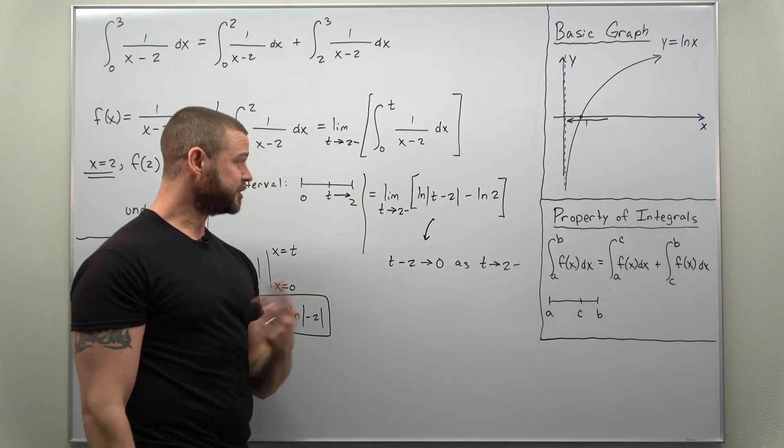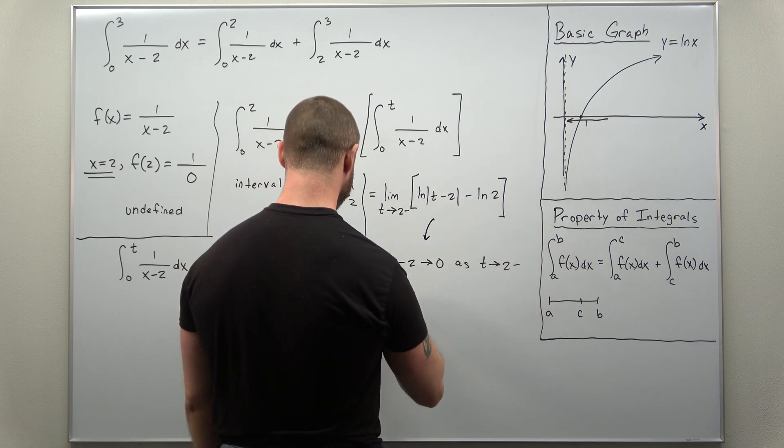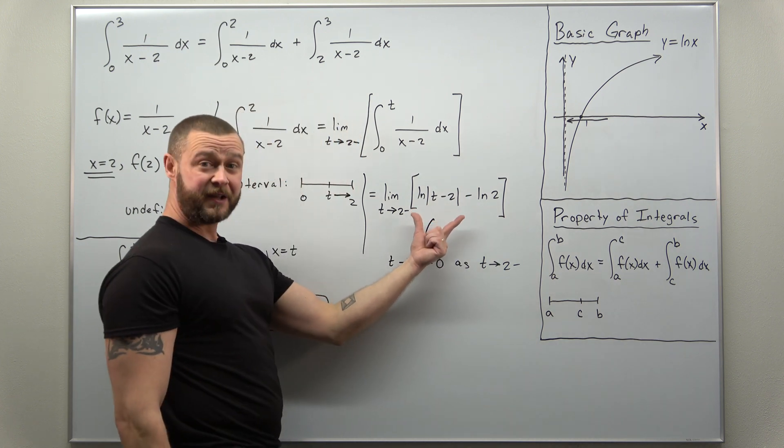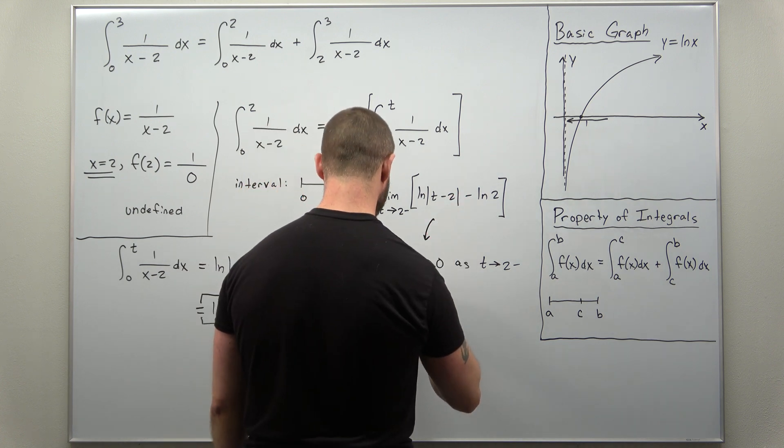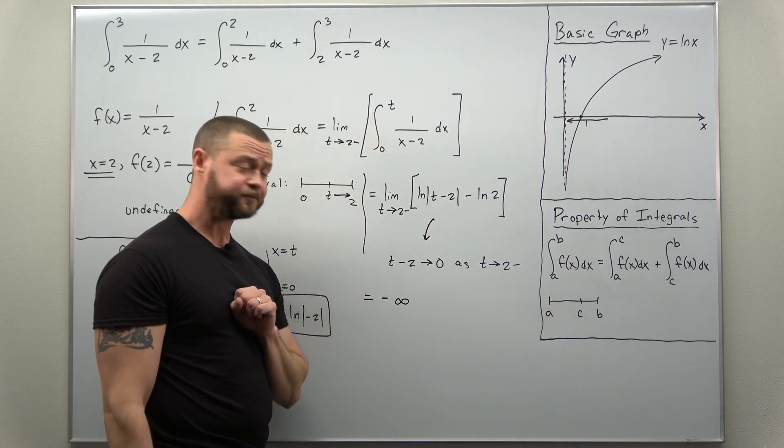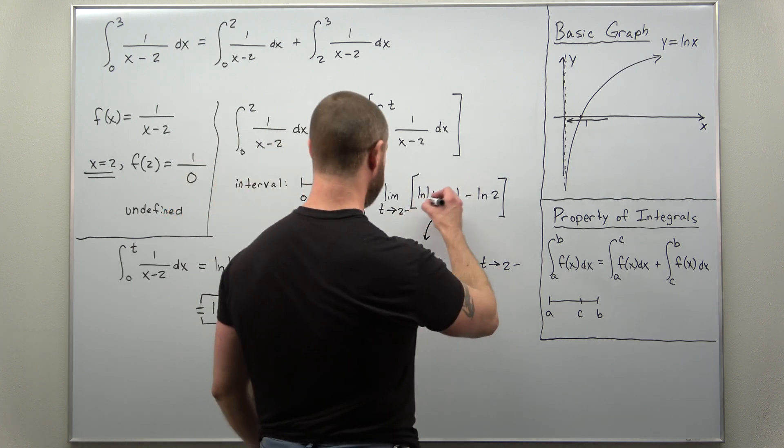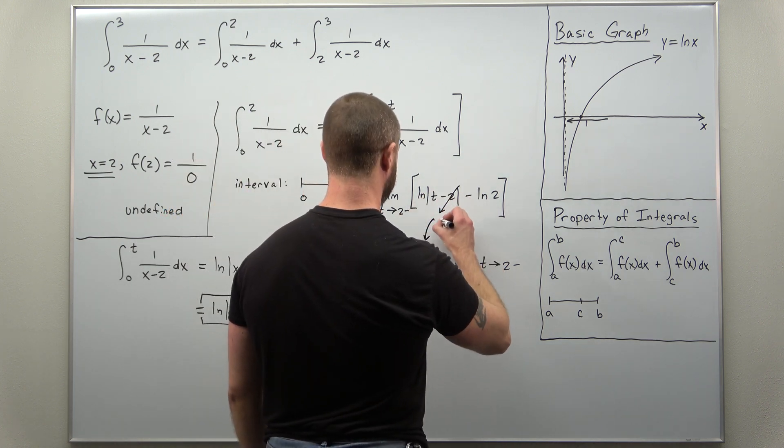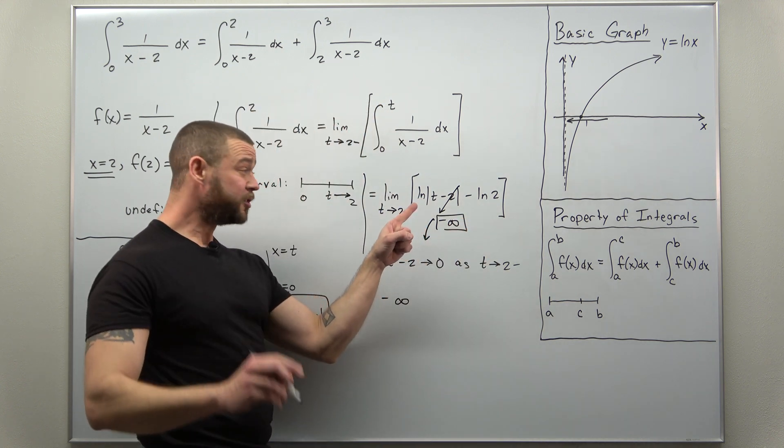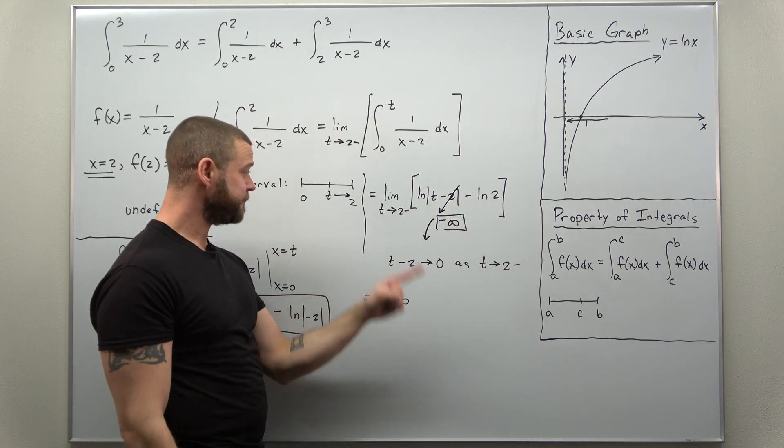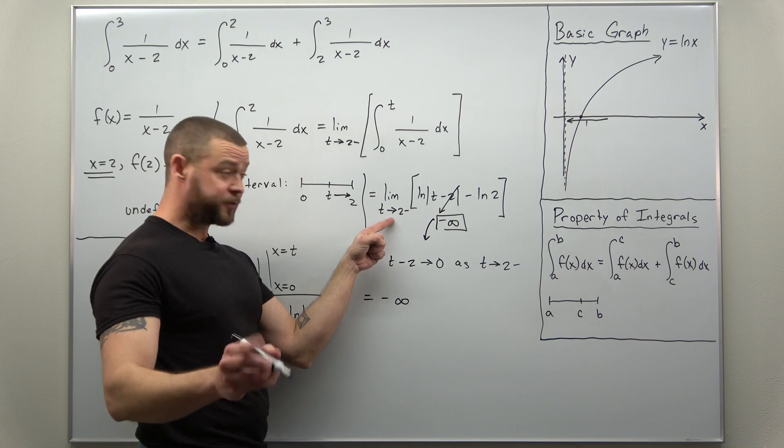So what we can determine here is this limit basically doesn't exist because it approaches negative infinity. That's what the limit of natural log of t minus 2 approaches as t approaches 2 from the left.